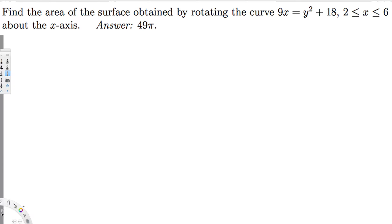Let's do this problem. The question is asking: find the area of the surface obtained by rotating the curve 9x = y² + 18 about the x-axis. We can do this in two different ways. Whenever we rotate around the x-axis we use the formula: surface area equals the integral of 2π y ds. If it's the y-axis, we use x instead.